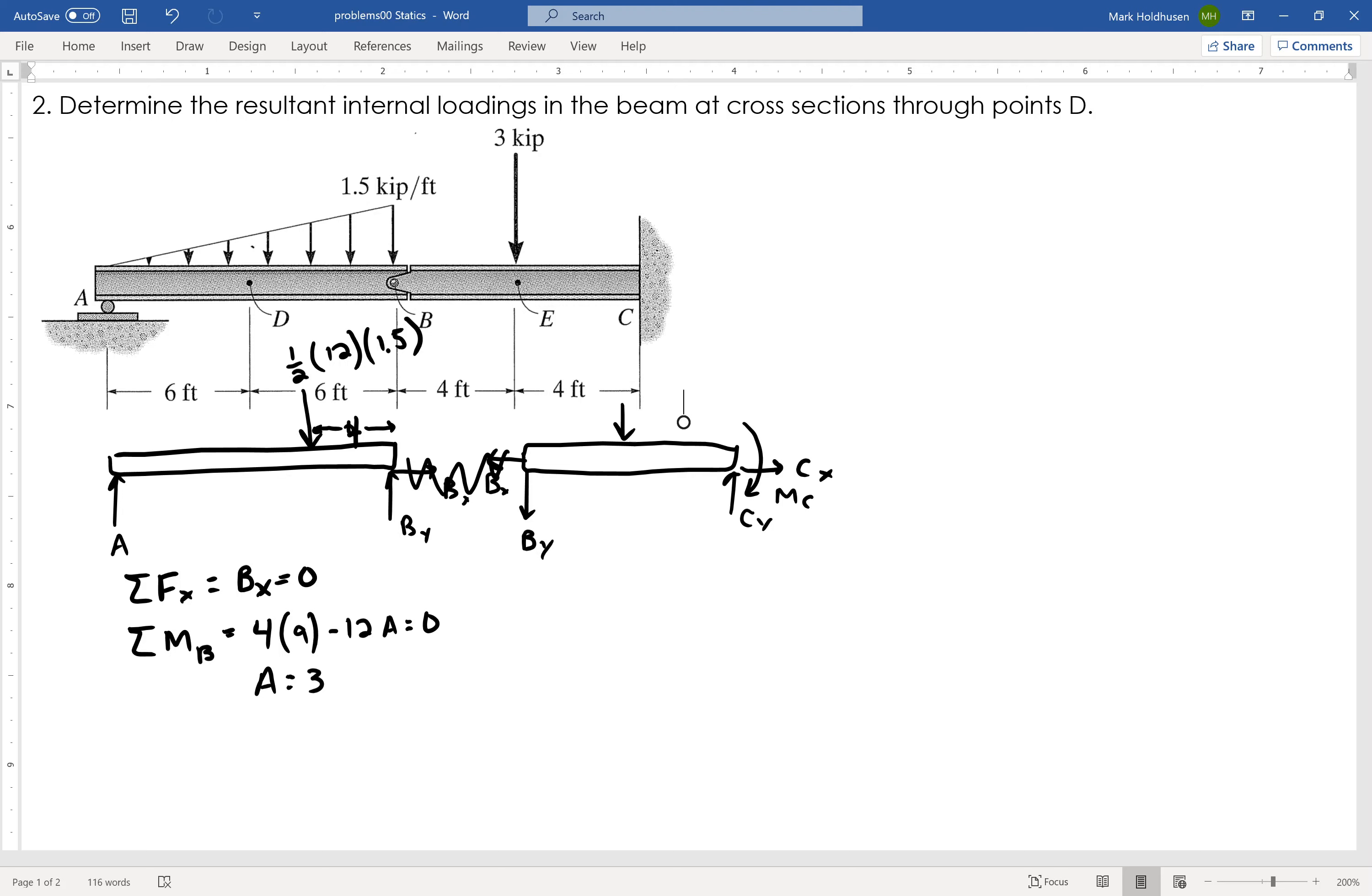So to find that internal moment at D, or internal loads at D, I'm going to make a cut right at D, and I can draw either side of the beam. I'm going to draw the left side, because I have A over there. I've got the distributed triangle load that I've got over there. So I'll go ahead and draw this guy over here. And again, I've got A, which I just calculated to be 3, acting upward.